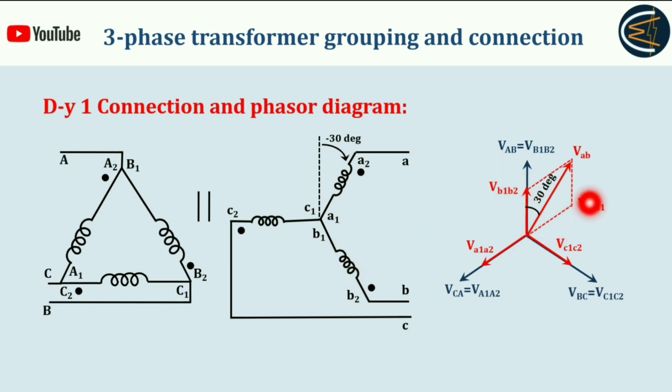B2 and V_A2A1. This is the resultant, which is nothing but V small ab, or the secondary side line voltage. As you can see, V small ab is lagging by 30 degrees with respect to V